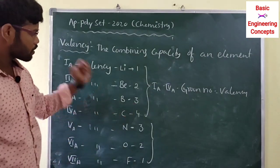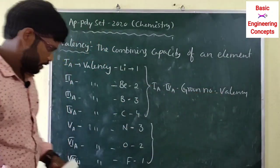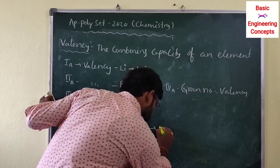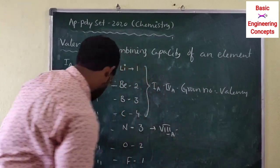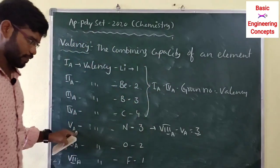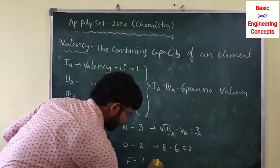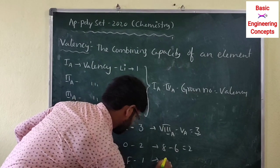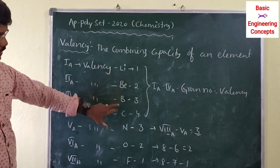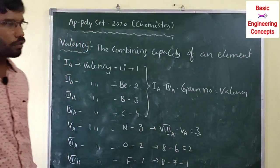Group 8 elements have zero valency. So for Groups 5 through 8, the valency is calculated as 8 minus the group number. Group 5: 8 minus 5 equals 3. Group 6: 8 minus 6 equals 2. Group 7: 8 minus 7 equals 1. From Groups 1 to 4, valency increases; from Groups 5 to 8, valency decreases.